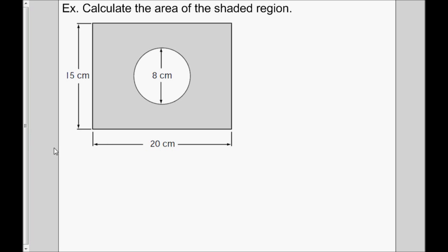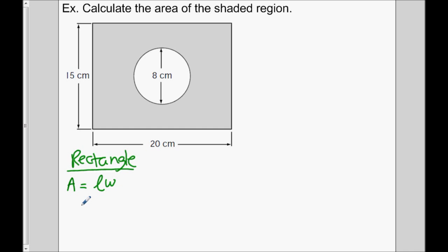Let's find the area of the rectangle first. The area of a rectangle is length times width. The length is 15 and the width is 20, so multiplying those gives you 300 square centimeters.